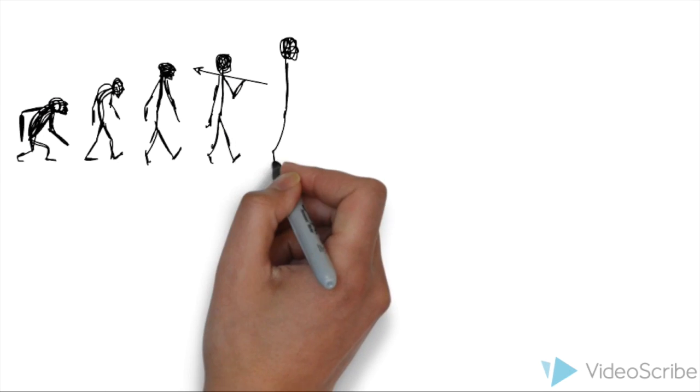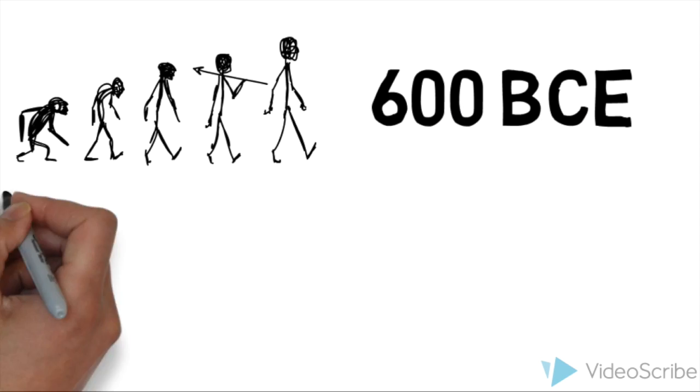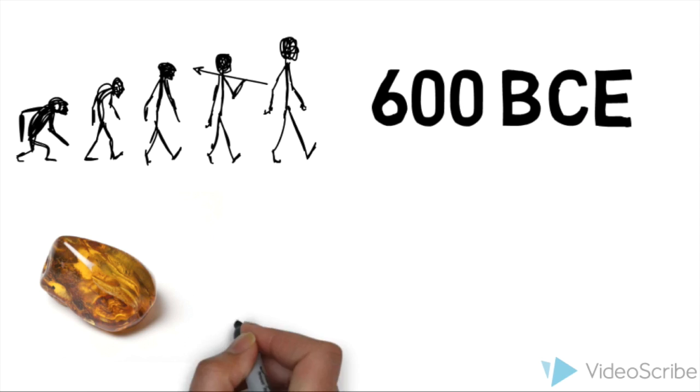But wait, what is charge? Let's rewind time for a brief moment back to the year around 600. It was known by the Greeks that if you rubbed amber, it attracts straw leaves.